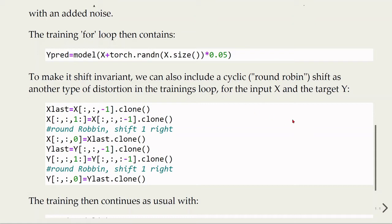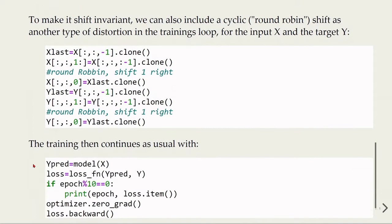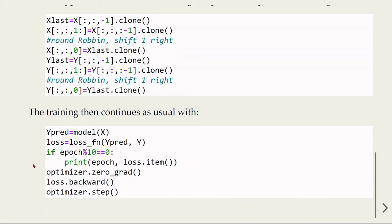For example, for the input X and the target Y, we can have this shift of one to the right like this round robin, so we will train trying to make it shift invariant. Then the training continues as usual for each epoch. We have the zero gradient in the optimizer, the loss backward, the optimizer step, and so on like we've been doing before.